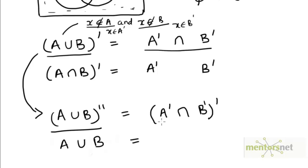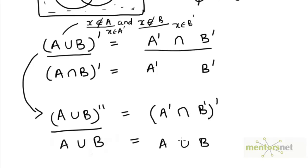This means that the right hand side should also ultimately become A union B. Now if we were to push the complement inside, A double complement would become A and B double complement would become B. So the effect of the complement on this intersection must be that it inverts the intersection and makes it into union.